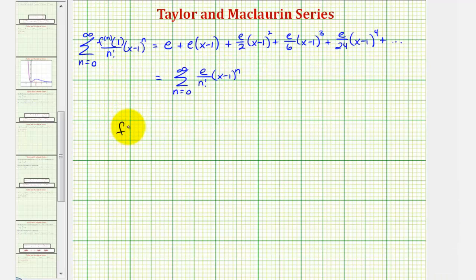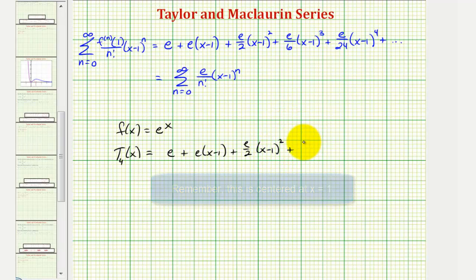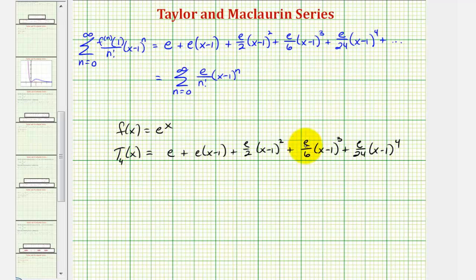Let's compare the graph of f of x equals e to the x and the polynomial function using the first five terms of our Taylor series, which is called the Taylor polynomial. We say t sub four, the degree four Taylor polynomial used to approximate e to the x, equals e plus e times the quantity x minus one, plus e divided by two times the quantity x minus one squared, and so on. When we use a finite number of terms from the Taylor series to form a polynomial, we call this a Taylor polynomial.